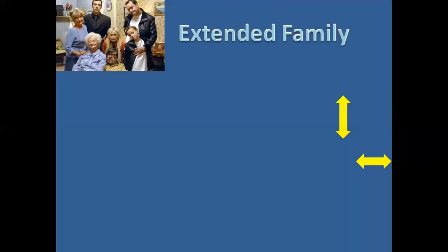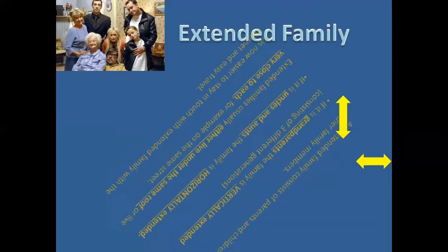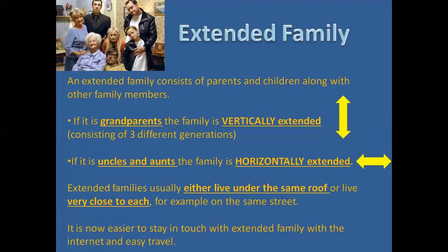Our second type of family is the extended family, which consists of parents and children along with other family members. If you have grandparents who live with you, your family is said to be vertically extended — three different generations all living together. If you have uncles and aunts that live with you, your family is said to be horizontally extended.